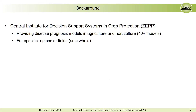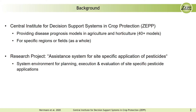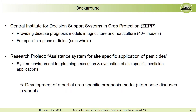First, I want to talk about the background of the work. The Central Institute for Decision Support Systems and Crop Protection, abbreviated ZEP, has developed more than 40 prognosis models for practical use in agriculture and horticulture. The prognosis is calculated for specific regions or fields as a whole. Our aim in this project was to evolve a partial area-specific prognosis model, exemplarily for stem-based diseases in wheat.